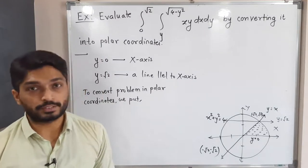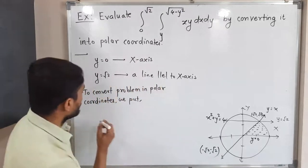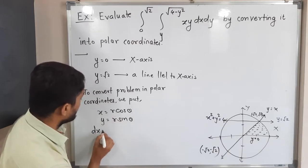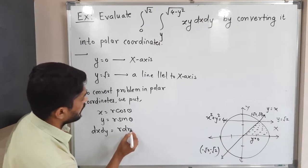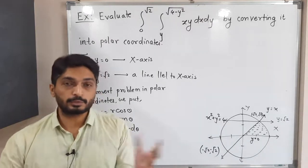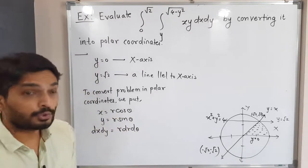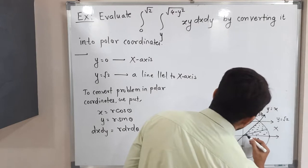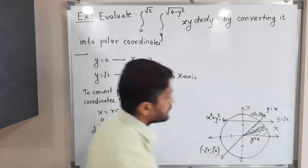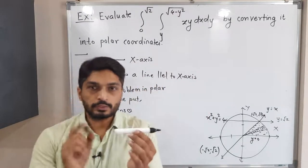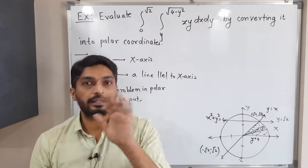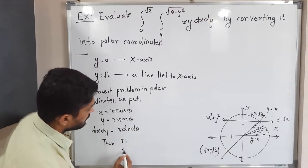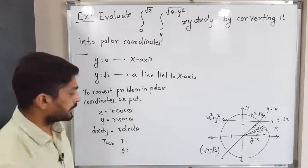Now we convert the problem to polar coordinates by putting x = r cos θ, y = r sin θ, and dx dy = r dr dθ, where r is the Jacobian value after substitution. In polar coordinates, we always draw a strip starting at the origin, which moves to cover the entire region of integration.